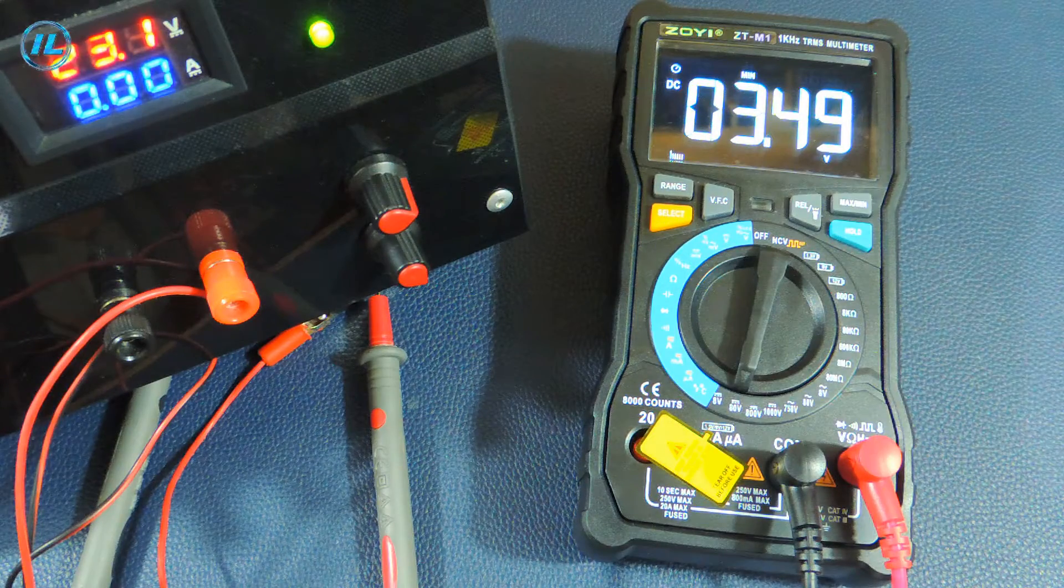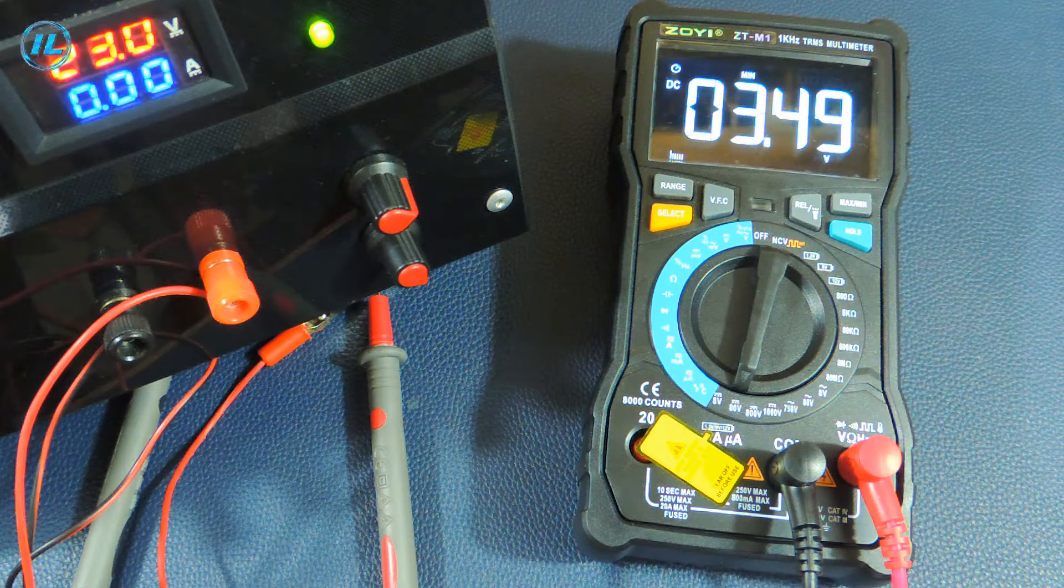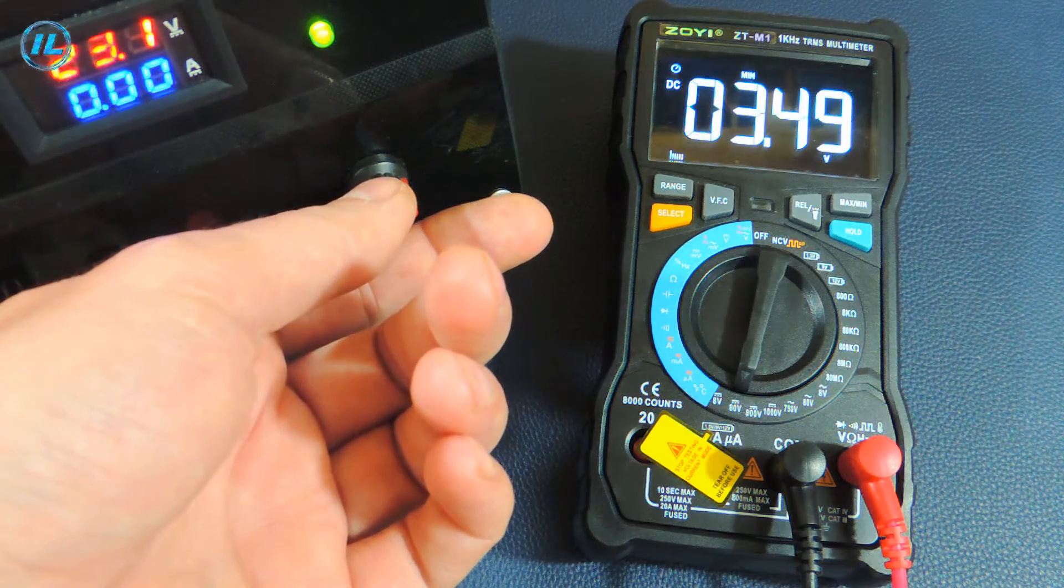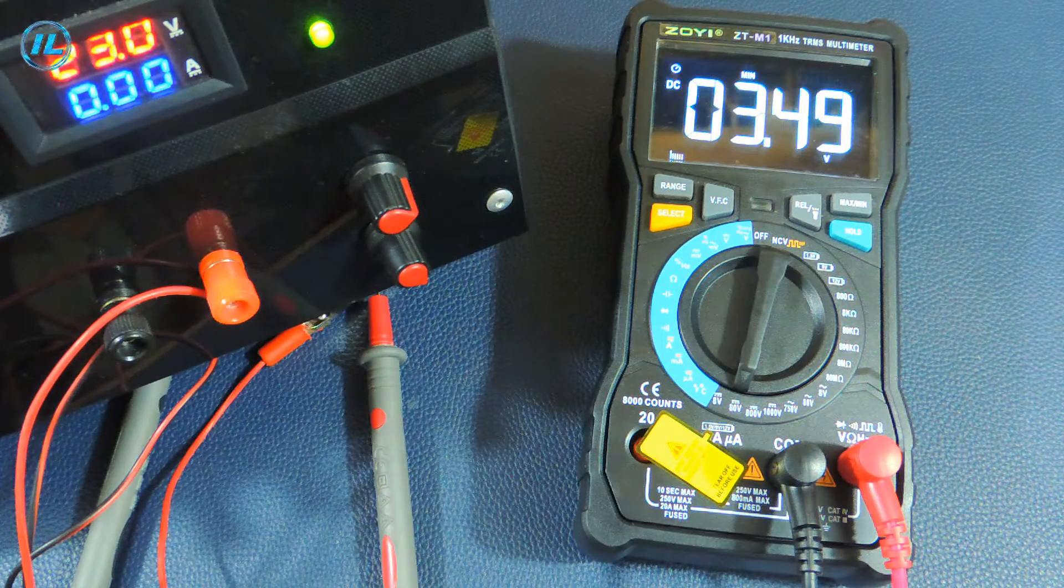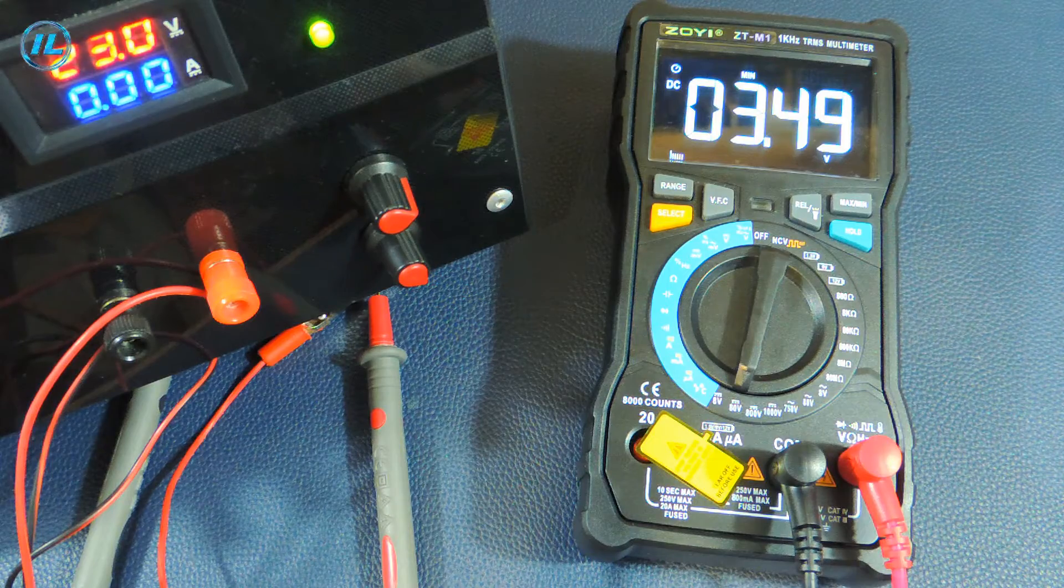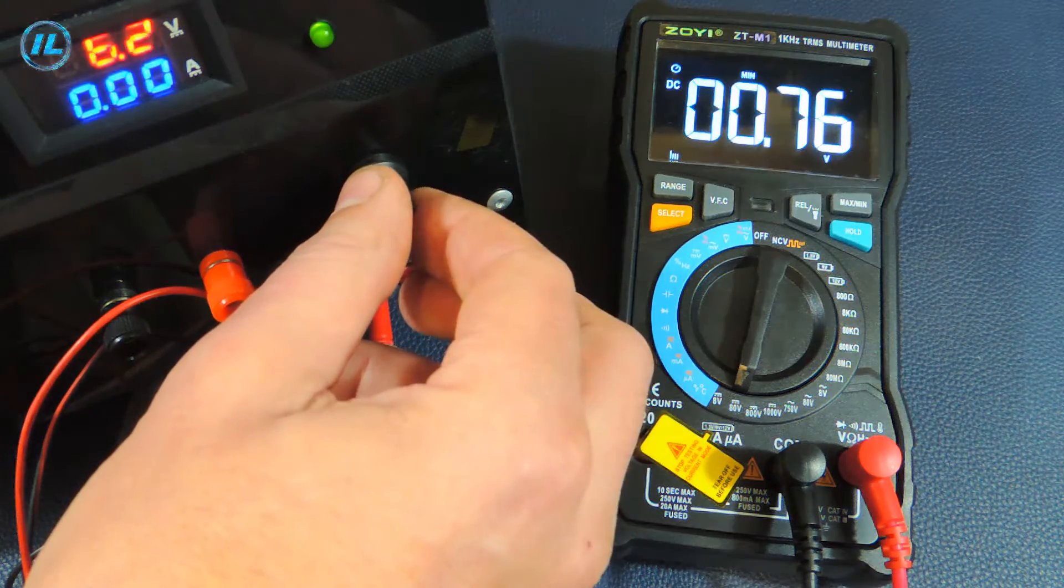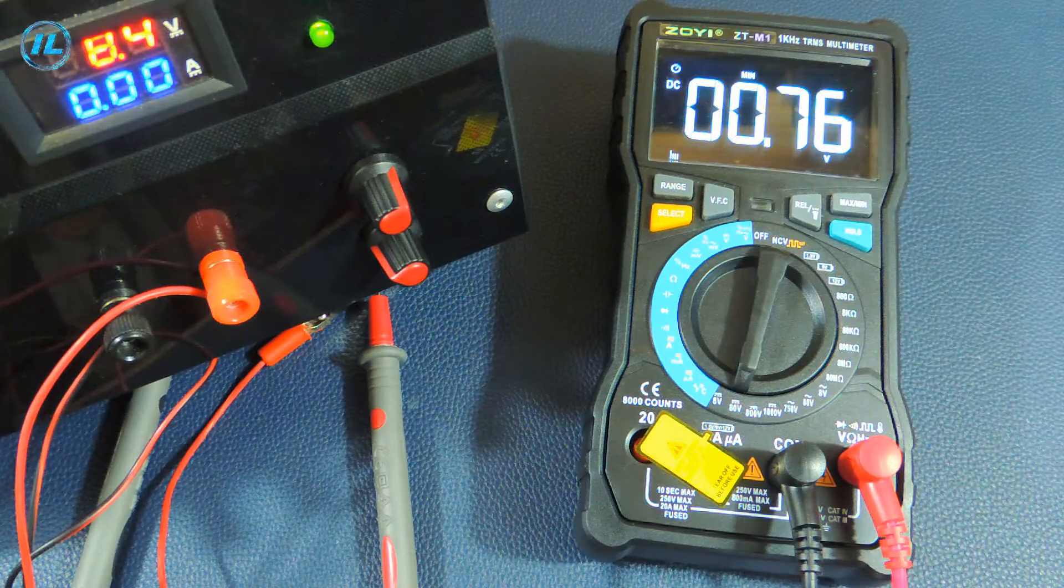Another press of the button turns on the minimum value measurement mode. The multimeter shows that the minimum voltage that was recorded is 3.49 volts. 0.76 volts.